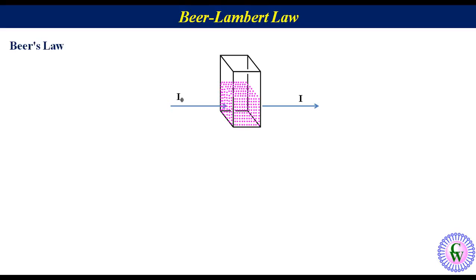Beer's law is the relation between absorbance and the concentration of the solution. According to this law, A is directly proportional to the molar concentration C of the solution. Let's label it as relation number 5.